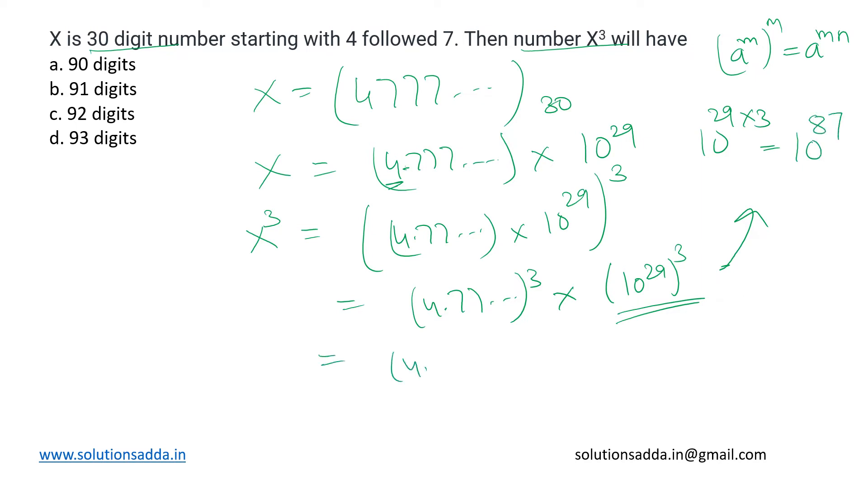So we have (4.777...)³ × 10⁸⁷. This is the number X³. Now how many digits is it having? This 10⁸⁷ is having 88 digits in total because it will be 1 followed by 87 zeros. And how many digits will (4.777...)³ have?